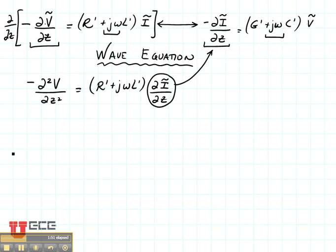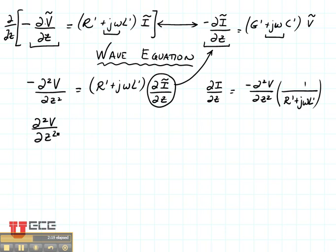So what that's going to give us, the derivative of i with respect to z is equal to the second derivative of v divided by r' plus j omega l'. Substitute that back in here, and the two negatives will cancel out, so we'll have second derivative of v in space is equal to r' plus j omega l' times g' plus j omega c', that term right there, times v.